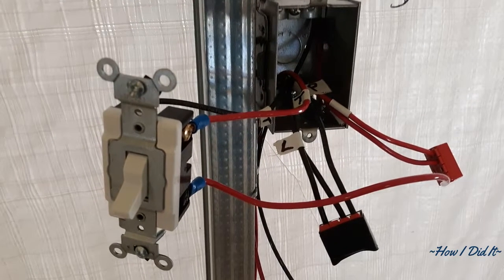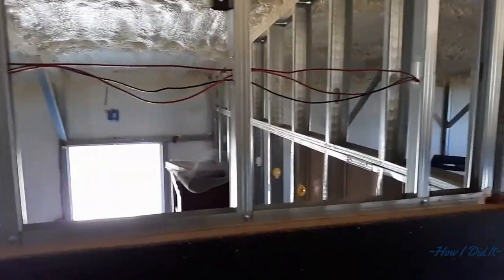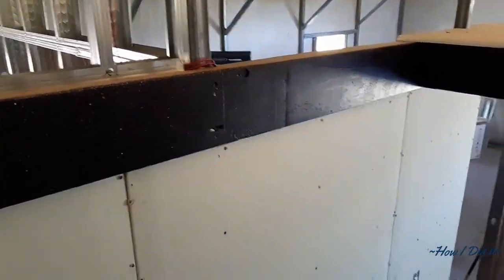Hello there, how are you? Welcome back to How I Did It. Today's video is going to show how I wired a three-way switch into my 12-volt lighting system in the off-grid barn.